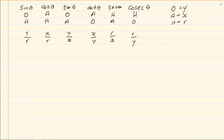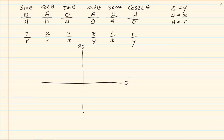So we have our ratios written with O, A and H, and we also have our ratios written with X, Y and R. We also need to know our Cartesian plane. The Cartesian plane starts at zero degrees on the horizontal line — it is different from geography, so you must be careful.